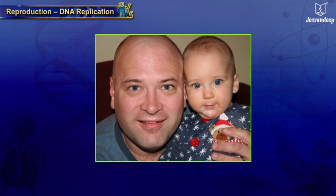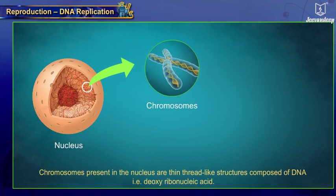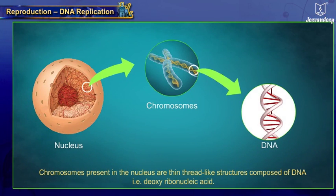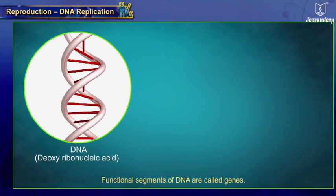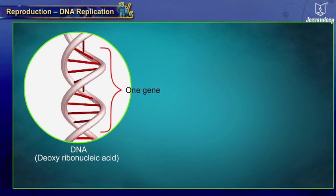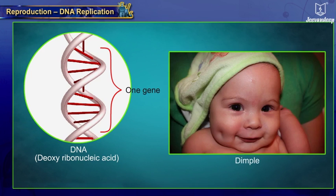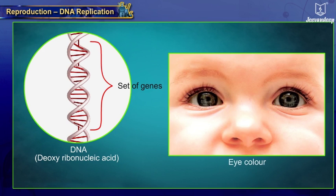DNA copying plays an important role in the inheritance of characters from parents to offspring. Chromosomes present in the nucleus are thin thread-like structures composed of DNA, that is deoxyribonucleic acid. Functional segments of DNA are called genes. Generally, one gene is responsible for one or more cell functions, but sometimes a set of genes controls a single function.